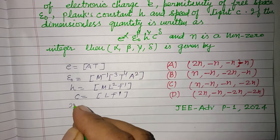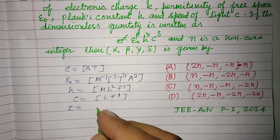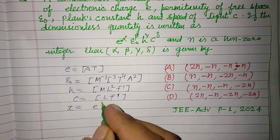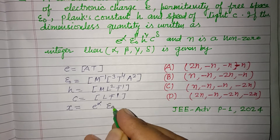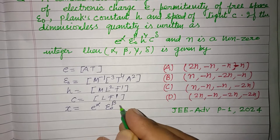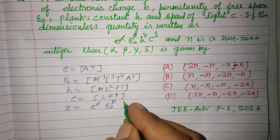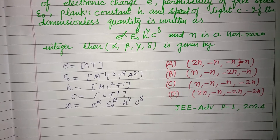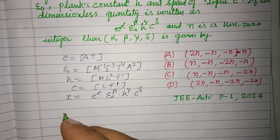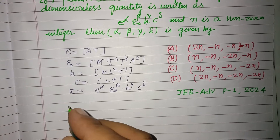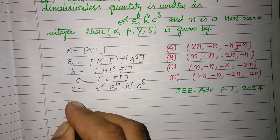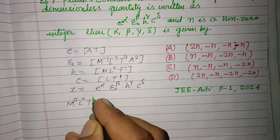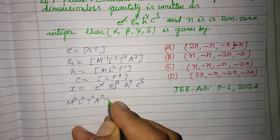Let the quantity X be dimensionless, equal to E to the power alpha, Epsilon naught to the power beta, H to the power gamma, and C to the power delta. Writing dimensions on both sides — since X is dimensionless, its dimensions are M0, L0, T0, A0.